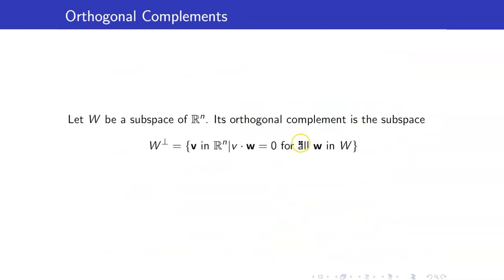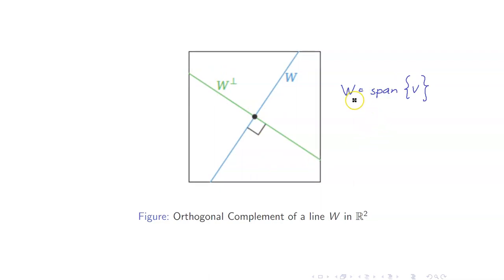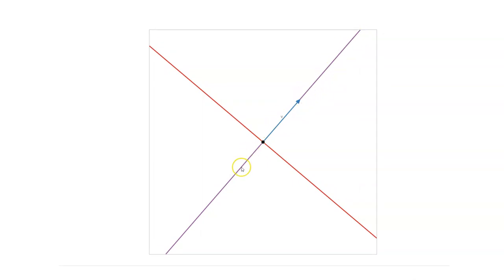Let us now discuss orthogonal complement. Suppose that w is a subspace of Rn. Its orthogonal complement is the subspace of all vectors in Rn that are orthogonal to every vector in w. Here is a picture of the orthogonal complement of a line in R2. A line in R2 is the span of a single vector. Its orthogonal complement will be a line perpendicular to w.